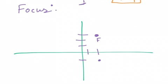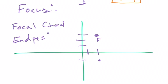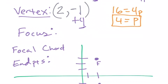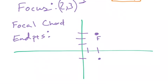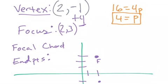What I'm going to do a little differently on this one is I'm going to go ahead and figure out my focal chord endpoints. So, by the way, the focus here, we said plus 4, right? So we said 2, 3. Okay. So how do we figure out the focal chord endpoints? Well, we said it's just 2p to the right and 2p to the left. So p is 4. So 2 times 4 is 8.